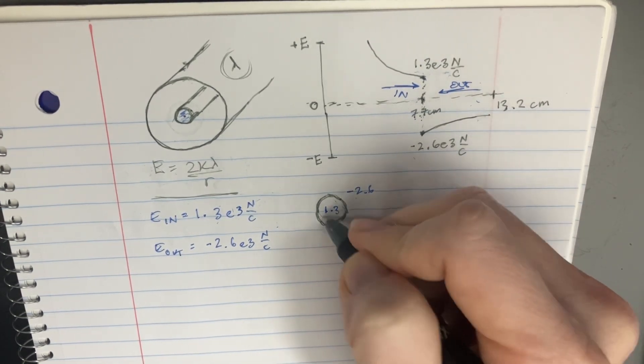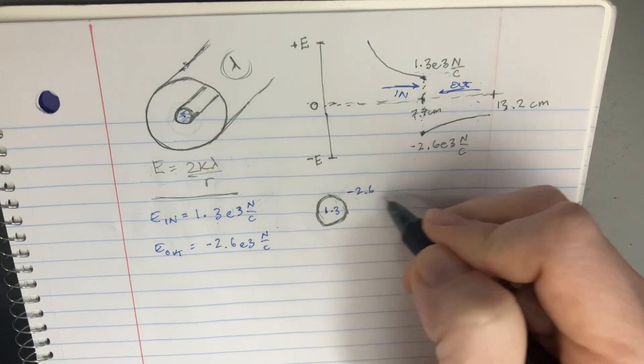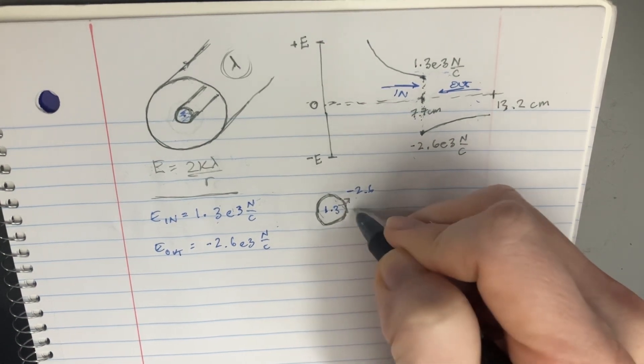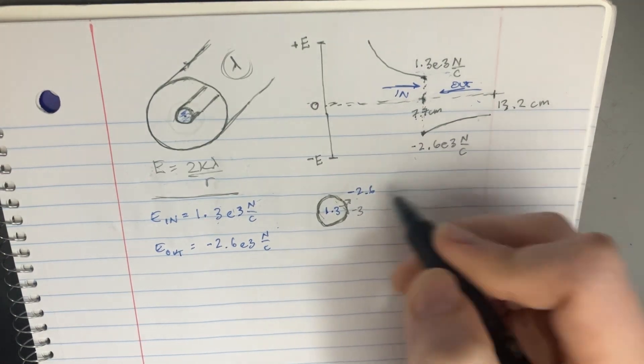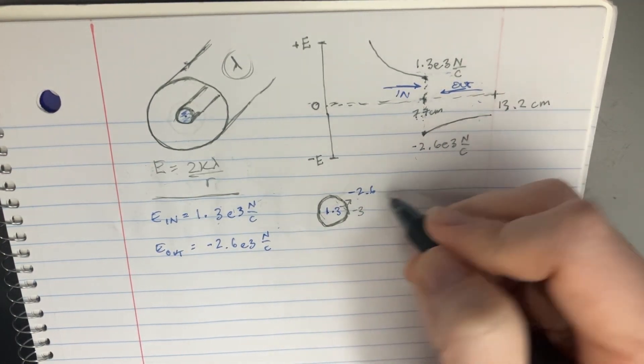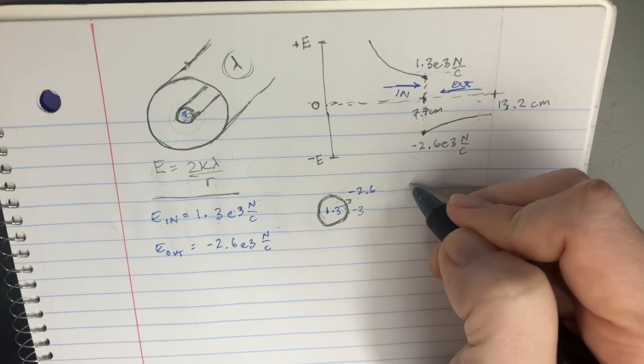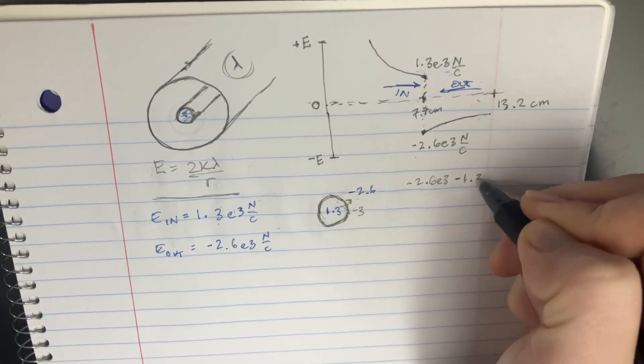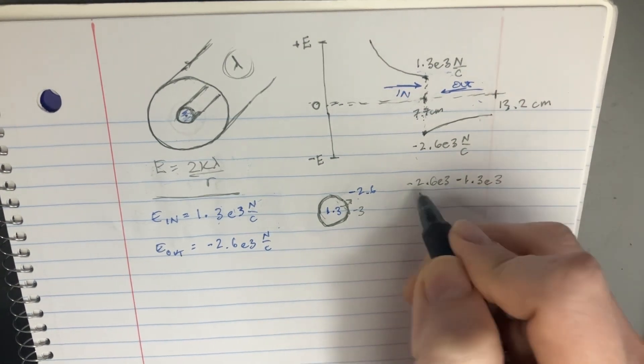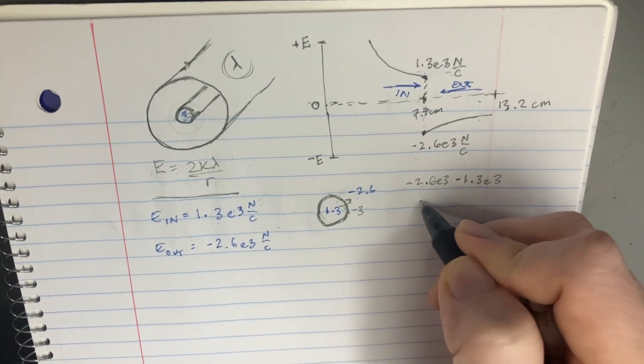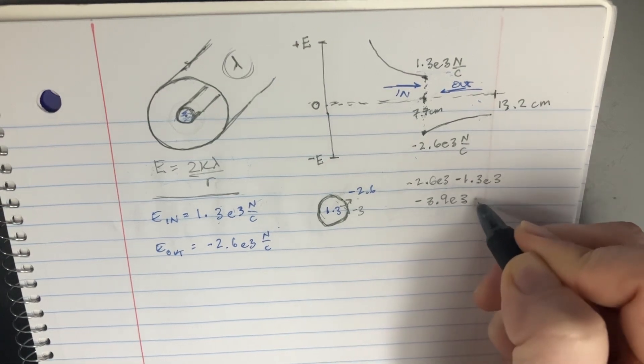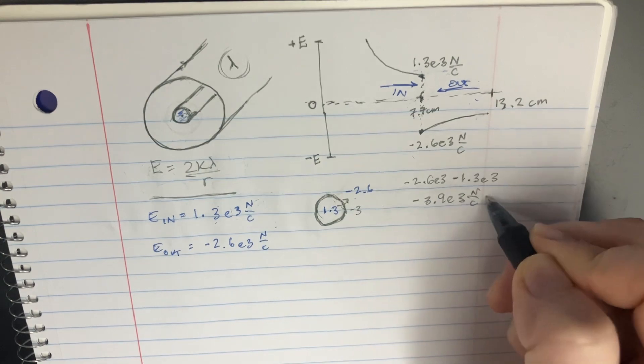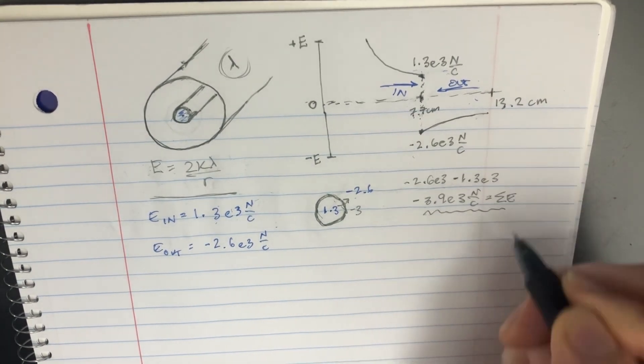And we figure out that that outside surface there is going to have a negative 3 to go from here to there. So outside minus inside is going to be negative 2.6 e to the third minus 1.3 e to the third, and that's just going to give us negative 3.9 e to the third Newtons over Coulombs. So this is going to be the net electric field in that area.